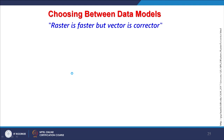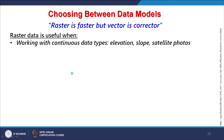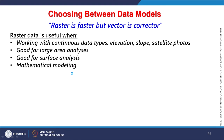Which model to choose? The best answer is: it depends on your project and what data is available. We know raster is faster but vector is more correct — more accurate. Raster is useful when working with continuous data types such as elevation, slope, and satellite images; good for large area analysis and surface analysis, since raster by nature represents a surface — whether elevation, pollutant, or soil surface — and mathematical modeling is easier. If spatial detail is not critical, raster is fine.